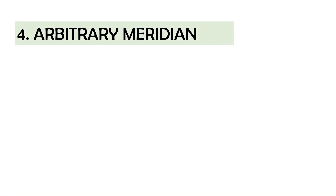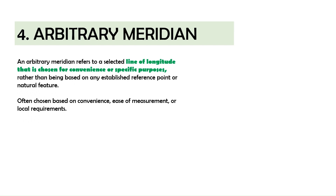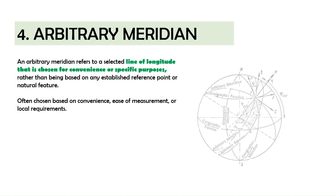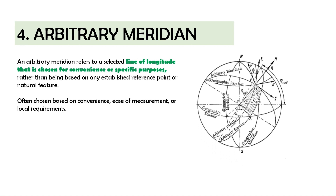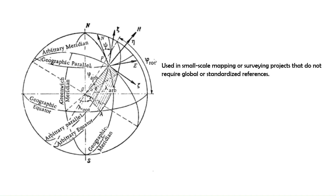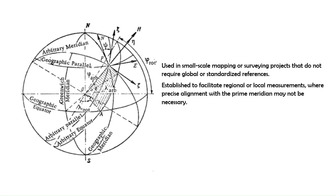In addition to the true and magnetic meridian, there is a third type: the arbitrary meridian. An arbitrary meridian refers to a selected line of longitude chosen for convenience or a specific purpose, rather than being based on any established reference point or natural feature. It is not aligned with any significant geographic or magnetic marker. Unlike the prime meridian, which is internationally recognized, an arbitrary meridian can be any line of longitude designated for a particular project or local use, often chosen based on convenience, ease of measurement, or local requirements. Arbitrary meridians are sometimes used in small-scale mapping or surveying projects that do not require global or standardized references.